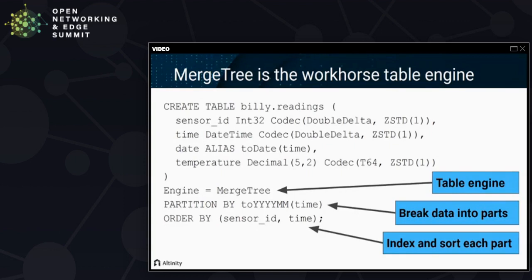Looking at the columns themselves, there are four columns with a couple of notable keywords. One is codec, which allows us to control compression very exactly. By default ClickHouse compresses all data using LZ4 compression, but in this case we're also applying a double-delta codec for the first column — a type-specific transform that reduces data size — and then ZSTD compression, giving better compression at the cost of somewhat higher CPU on writes. The third column uses an alias, meaning it's computed off the column before it, so it isn't actually stored, which saves space.